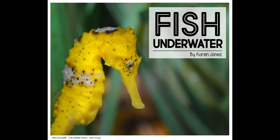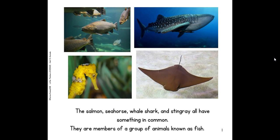Today we're going to read a non-fiction text called Fish Underwater by Karen Jones. The salmon, seahorse, whale shark, and stingray all have something in common — they are members of a group known as fish.